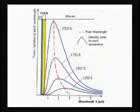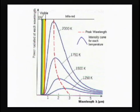Looking at the graph, visible light, ultraviolet, and infrared are labeled. Moving from left to right decreases energy and increases wavelength. A star at 2000 K has a very high, narrow peak. At 1750 K, the peak is lower and moves slightly to the right — longer wavelength and lower energy.